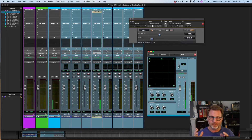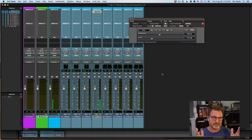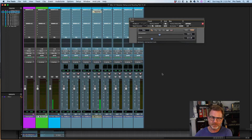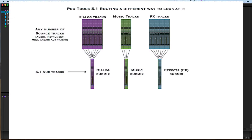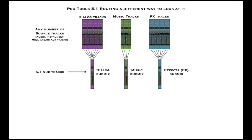So here are all three groups in this session — and you could have more if you wanted. In a music application, one group might be drums, one vocals, one guitars, one keyboards, one percussion. You're not limited to three. Here's the flowchart view of all three subgroups — dialogue tracks, music tracks, effects tracks — each being submixed through their own discrete 5.1 aux track. The folder track adds the ability to tuck away all those routed tracks and clean up the session view.